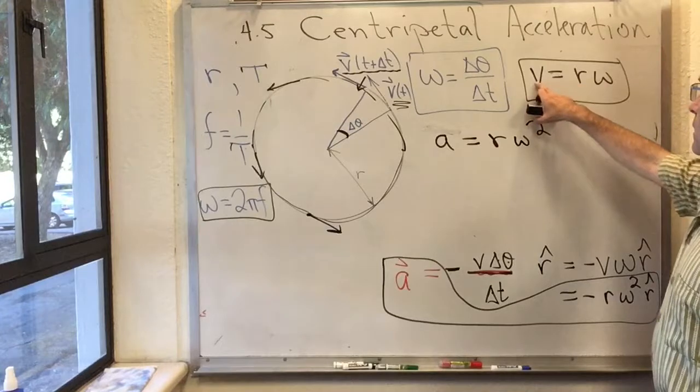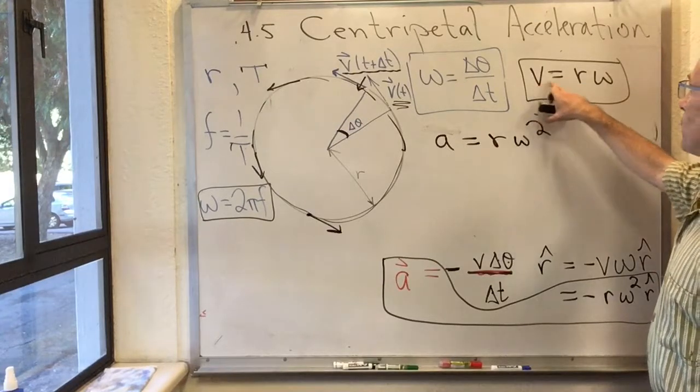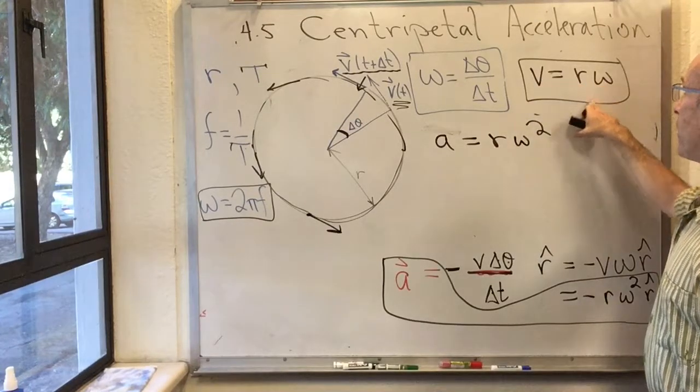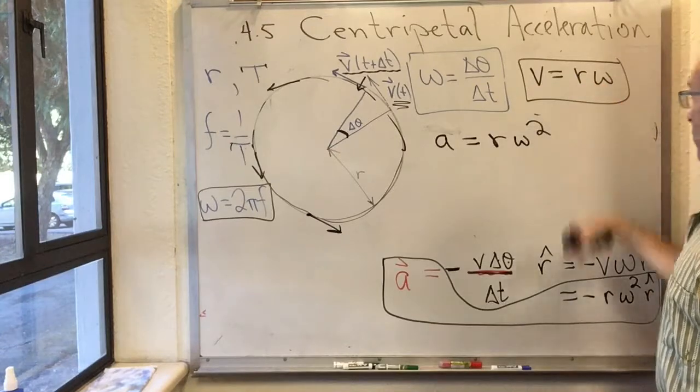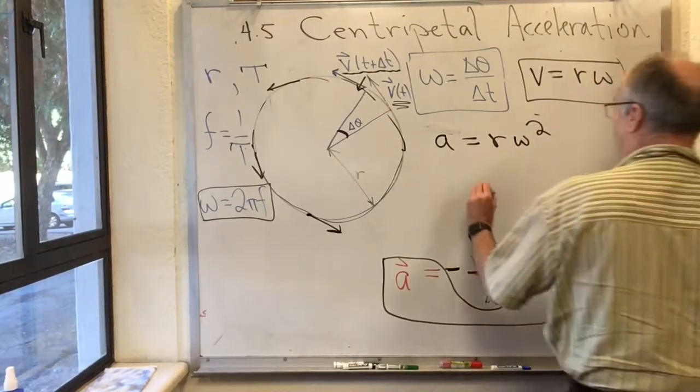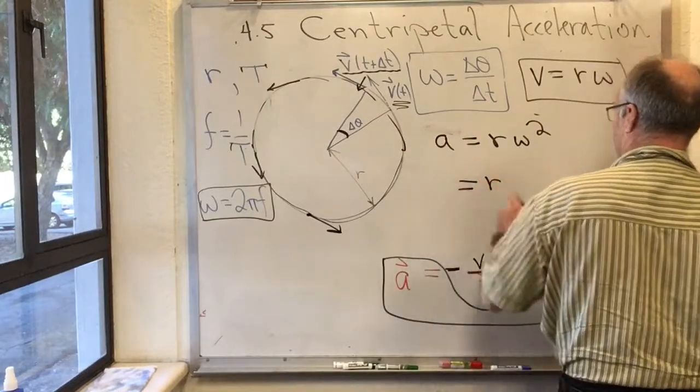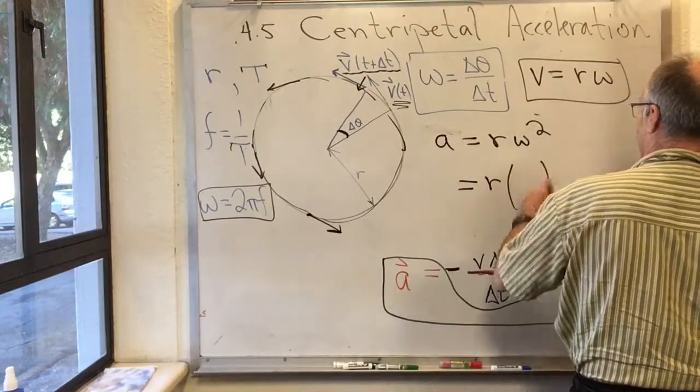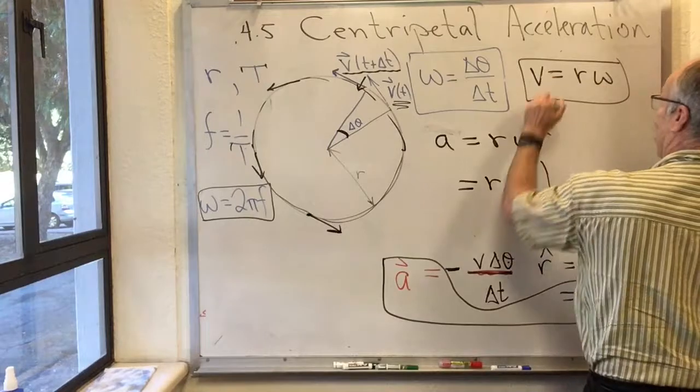And there's other ways of writing it. If you want, you see, if I've got this relationship between v, r, and omega, I can trade in any one of these variables for the others.